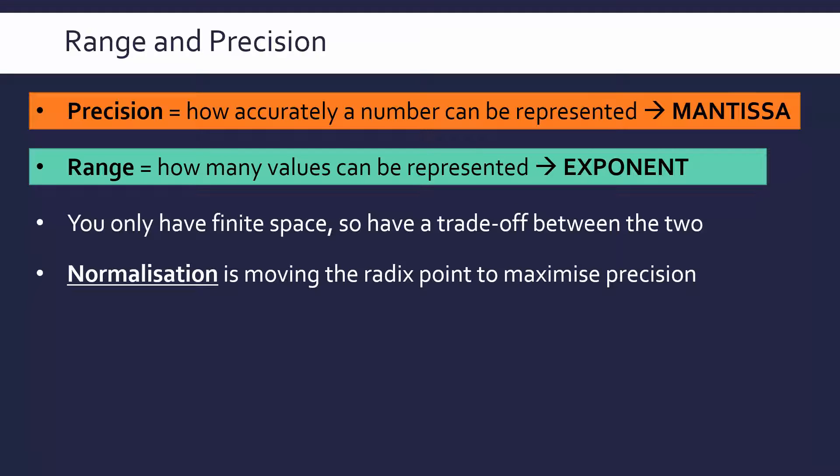And this does work generally. So moving our radix point, or in this case moving our decimal point, here we've got standard form. Now in green this is how you should show it. In standard form we've got 3.2 times 10 to the power of 7. This is 32 million in standard form.